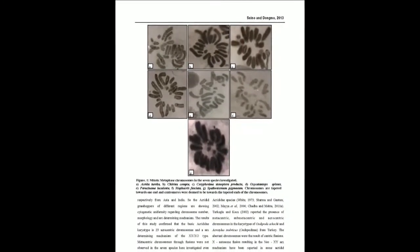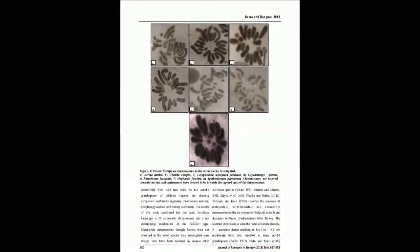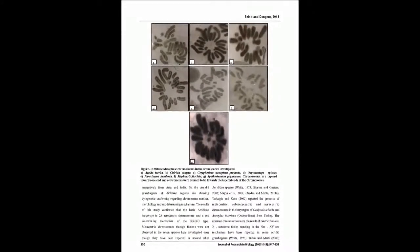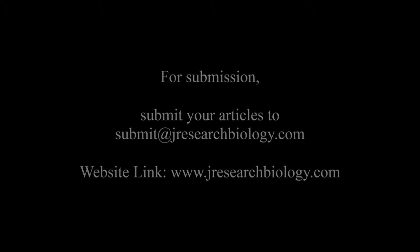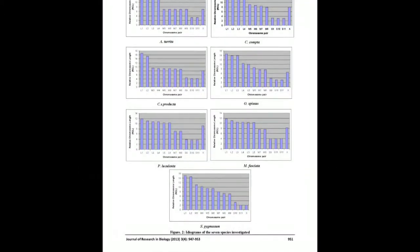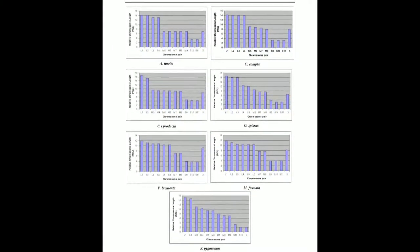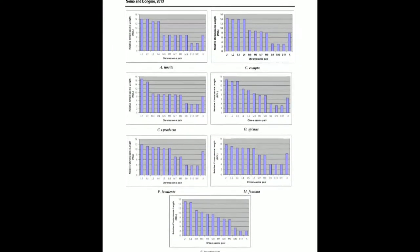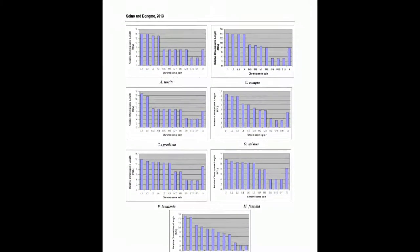The number of chromosomes per size group varied among species: A. turrida = 4L, 5M, 2S; Cicna = 4L, 4M, 3S; C. stenotr. producta = 2L, 6M, 3S; O. species = 5L, 3M, 3S; P. leuculata = 6L, 2M, 3S; M. fasciata = 6L, 2M, 3S; and S. pygmium = 2L, 7M, 2S.